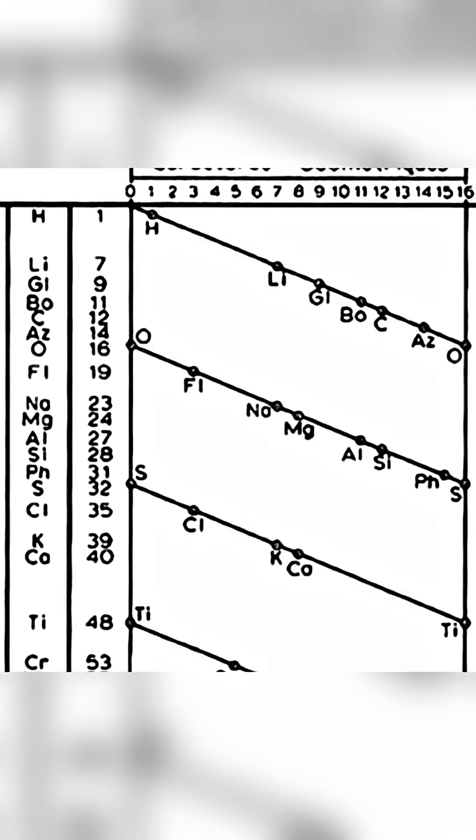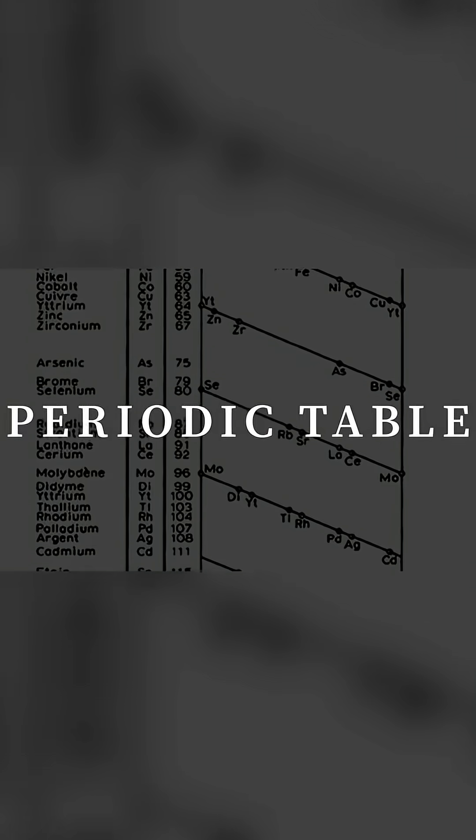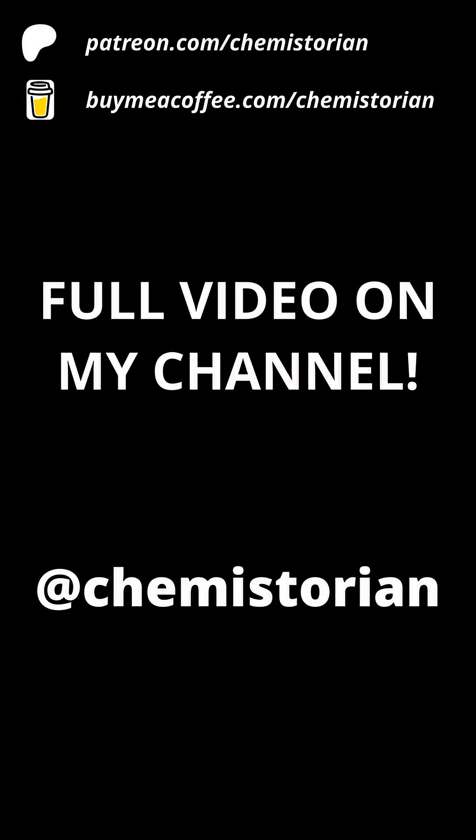There were many similar examples where the properties of elements periodically repeated as you went down the table. We could even call it a periodic table. That was exactly what Duchamp Courtois had done. He had created the first ever periodic table.